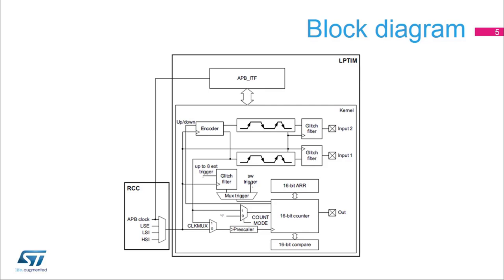The Low Power Timer peripheral embeds a 16-bit counter that is fed through a power-of-2 pre-scaler. It features a 16-bit auto-reload register and a 16-bit compare register that are used to set the period and duty cycle respectively for a PWM waveform signal output on the timer's OUT output. The Low Power Timer also features an encoder mode function that can be used to interface with incremental quadrature encoder sensors using the peripheral's Input-1 and Input-2 inputs. Both inputs feature glitch filtering circuitry.